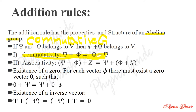Commutativity simply means: three plus five equals five plus three — the answer is the same. The second property of the addition rule is associativity.